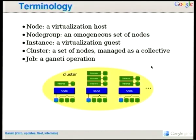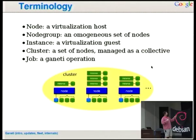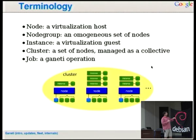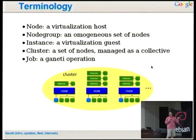A small terminology note: a node is a physical host, a node group is a group of nodes, an instance is a guest virtual machine, and a cluster is the whole set of nodes eventually divided into node groups. Any Ganeti operation is expressed as a job — except queries, which are a bit different — but any operation that changes the cluster is a job. You can get information from the cluster without a job.